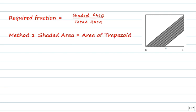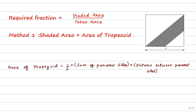Method 1 by calculating shading area using the formula for area of a trapezoid. Trapezoid is a figure with four sides such that two of the sides are parallel. For a trapezoid area is equal to half into sum of parallel sides into distance between parallel sides.